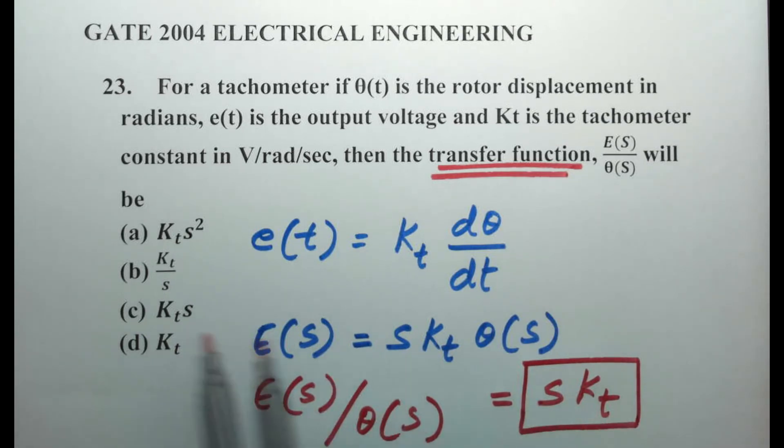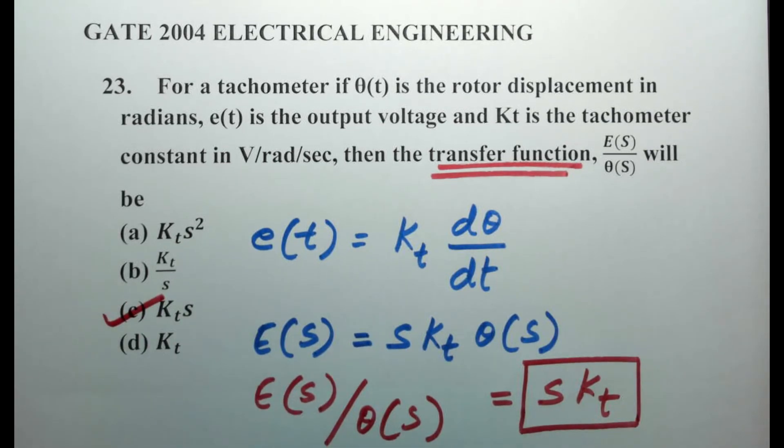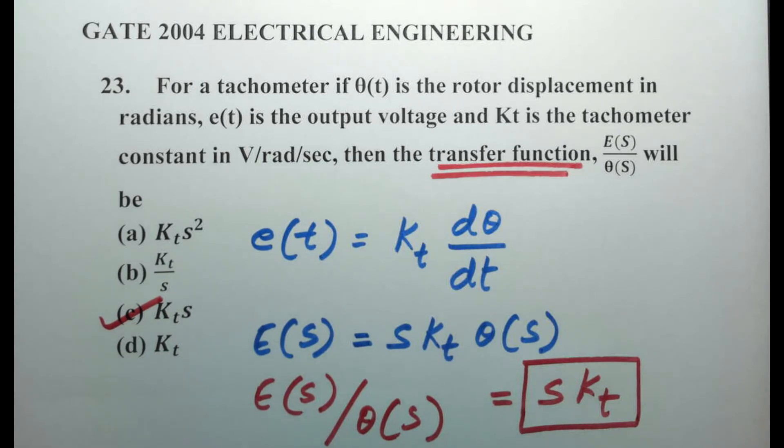It comes under option c. So kt into s is the final answer here for the transfer function of the tachometer.